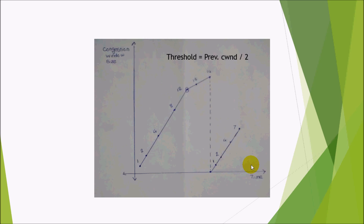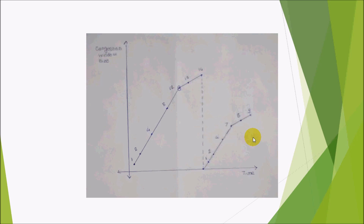Here we can see the difference: previously it was 8, but now it is 7. Because when congestion occurs, the new threshold value is set as half of the previous maximum congestion window size. Here the maximum congestion window size was 14, so the new threshold is set to 14 / 2 = 7. According to the formula, the increment would give 8, but since it exceeds the threshold value, we set it to 7. After 7, we continue to increment by MSS — that is 1 — so the next transmissions are 8, 9, and so on.